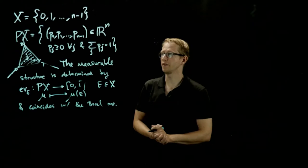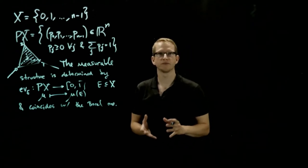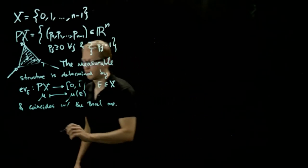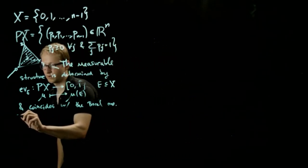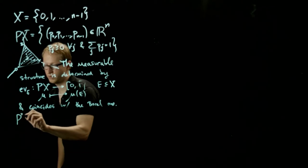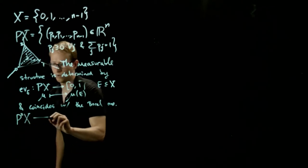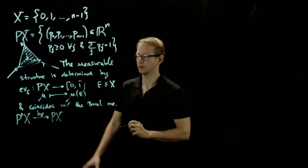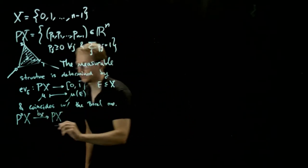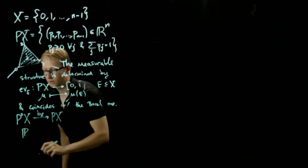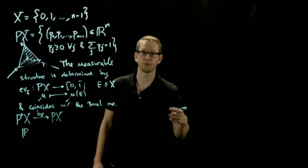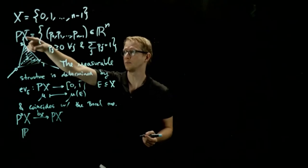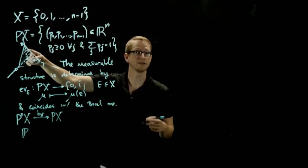That corresponds to the Borel sigma-algebra given by the standard topology on Rn. Now let's look at what that natural transformation from P-squared to P gives us — the one we denote by B. So in this case, we have P-squared x to Px with our natural transformation Bx. If we take a probability measure here — a probability measure on probability measures, which is a probability measure on this simplex.